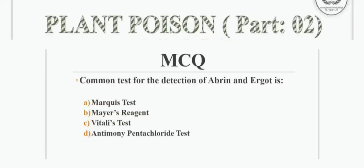In our previous uploaded video, the topic was Plant Poison Part 2. The question was: the common test for the detection of abrin and elgort is — Option A: Marcus test; Option B: Mears reagent; Option C: Vitalis test; Option D: Antimony pentachloride test. The correct answer is Option A: Marcus test. The answer is also given in the comment section below.